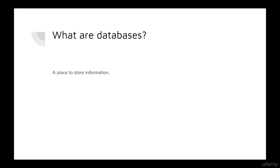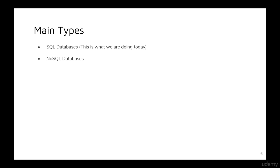What are databases? At the core level, it's a piece of software that allows you to store information and retrieve that information. There are two main types: SQL databases, which is what this course is on, and NoSQL. NoSQL is an unstructured form of data that's useful if you're dealing with stuff that doesn't have the same structure every time you look at it.